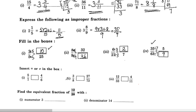Insert equal or not equal. For 5 by 7 and 4 by 6 — cross multiply to check. For 3 by 8 and 27 by 72: 9 into 3 is 27, and 8 into 9 is 72. So if we multiply numerator and denominator by 9, we get 27 by 72. Therefore 3 by 8 is equal to 27 by 72. For 4 by 11 and 12 by 33: 11 into 3 is 33, and 4 into 3 is 12. So 4 by 11 is equal to 12 by 33.